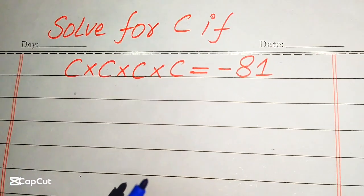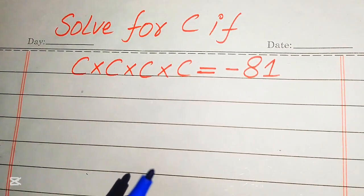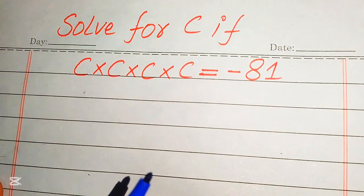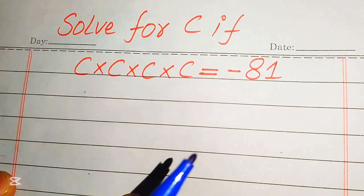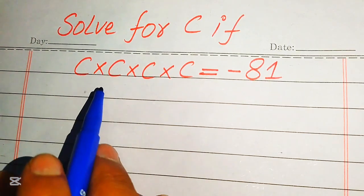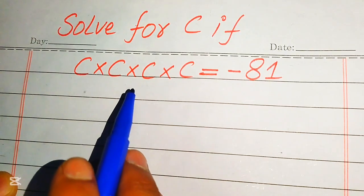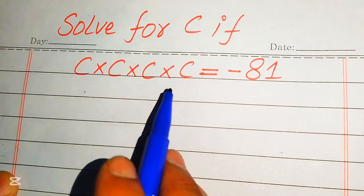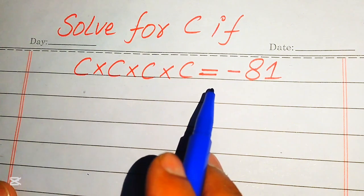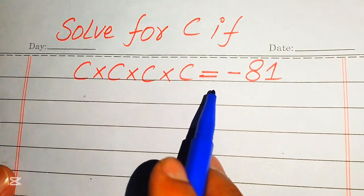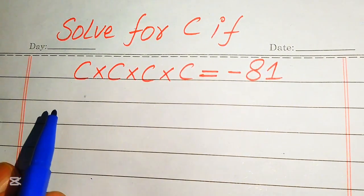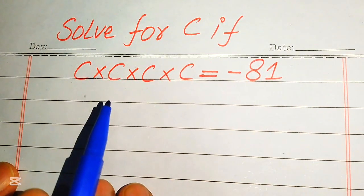Hello everyone. Today I want to show you how to solve this problem for the values of c, if we have c multiplied by c multiplied by c multiplied by c equals minus 81, and we solve this problem for the values of c.